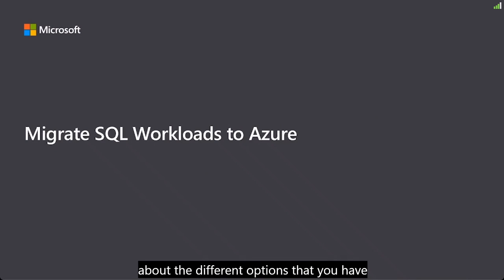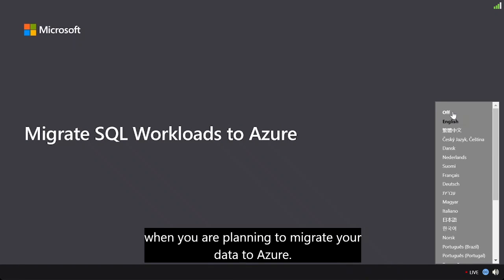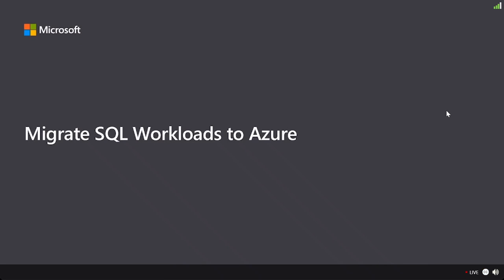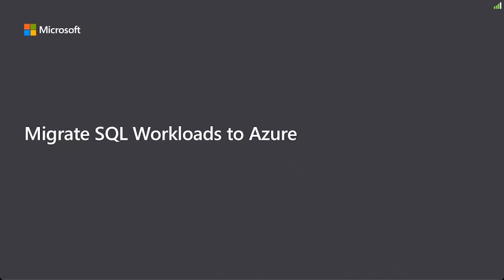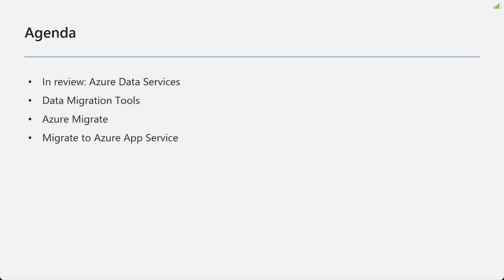So far, we are learning about the different options that you have when you are planning to migrate your data to Azure. On this chapter, we're going to be doing an actual migration, so we can see how that behaves on the toolings, and how do we connect our on-premise machine to the SQL virtual machine that we have running in our subscription. We'll review Azure data services, get to know other data migration tools, do the Azure migration, and also have a glance at the application migration service.